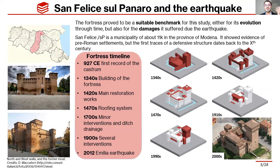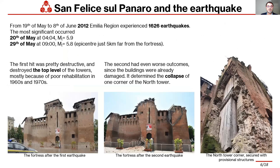The reason we chose the San Felice sul Panaro Fortress is because it has a very long history spanning over 1,000 years, and also because this evolution took place at different times. The shape of the fortress and the North Tower is not common and not easy to reproduce. Additionally, in the Emilia earthquake of June 2012, it was heavily damaged by two very strong quakes that occurred so close together that there was no time to secure the damaged parts, causing portions of the corner of the North Tower to collapse.